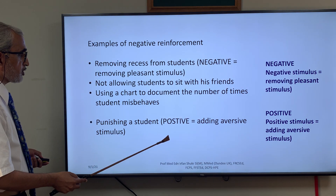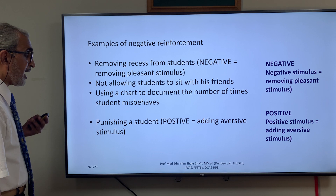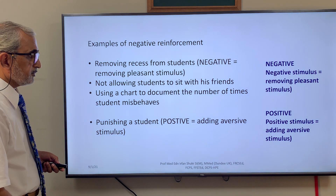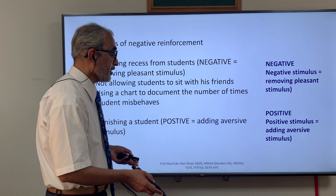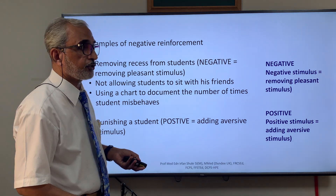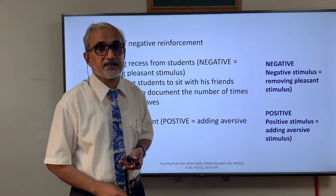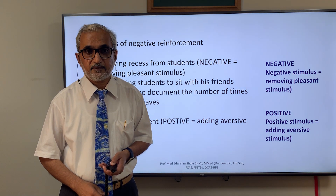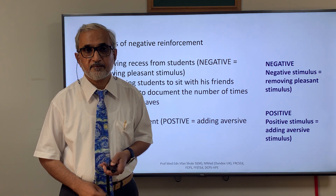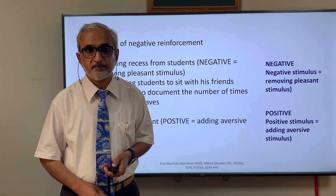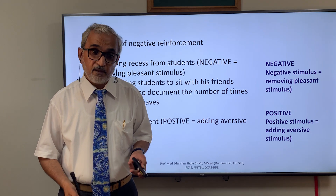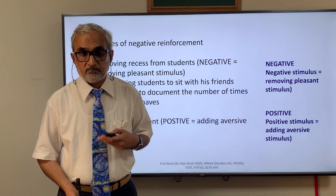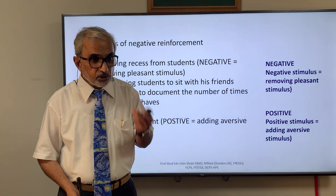Punishing a student involves adding an aversive stimulus — it is positive because something is being added. For example, it could be as simple as asking the student to stand for some time, or telling the student that they are not doing the right thing.